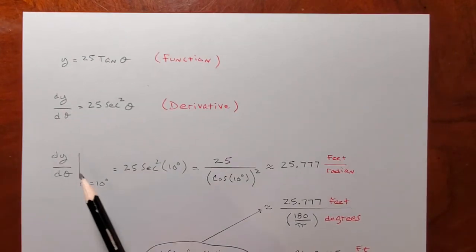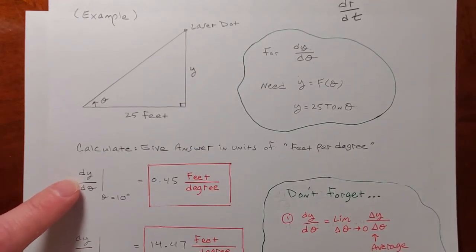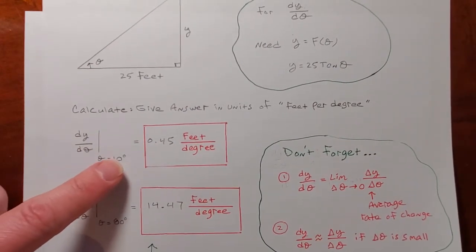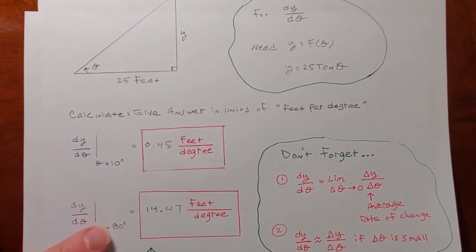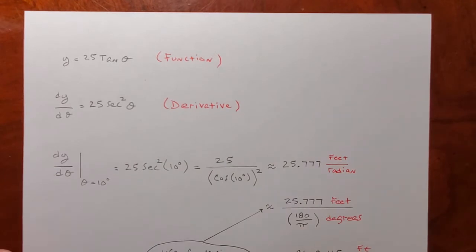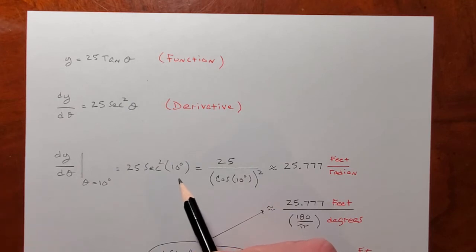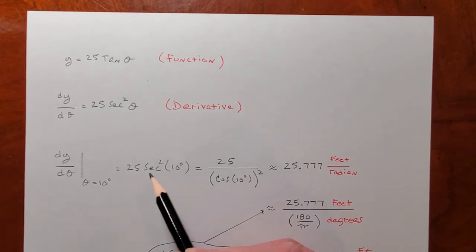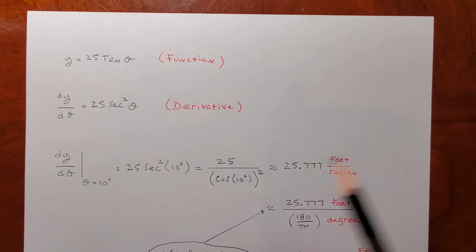Now, if you want dy over dθ when theta is 10 degrees — because that was the question — you take 25 secant squared theta and put 10 degrees in. Since secant is one over cosine, I could calculate this as 25 over cosine of 10 degrees, then squared. You'll get 25.777.